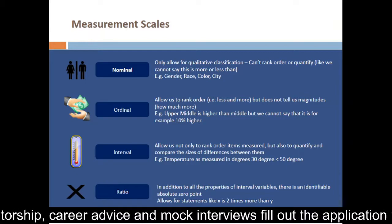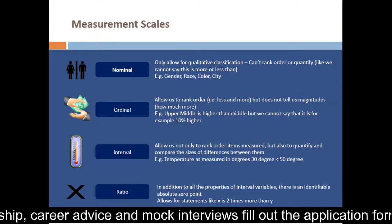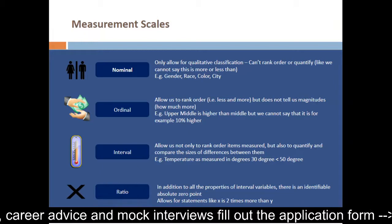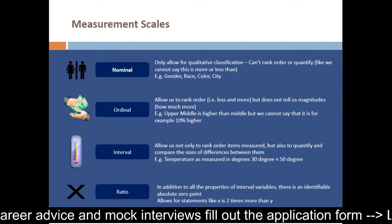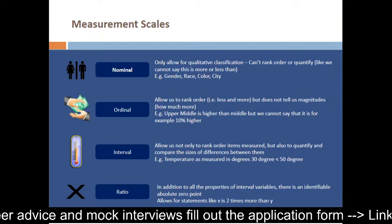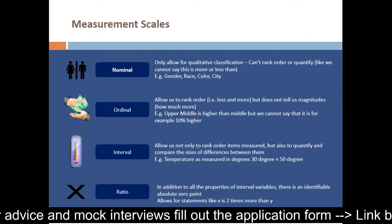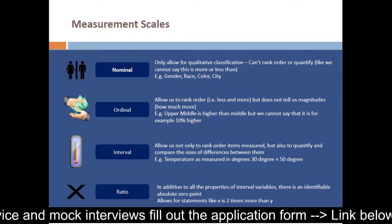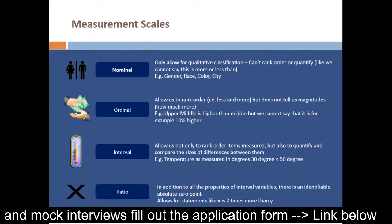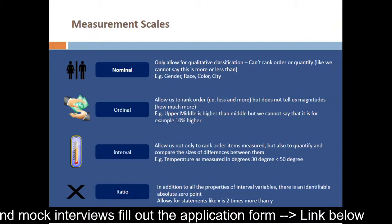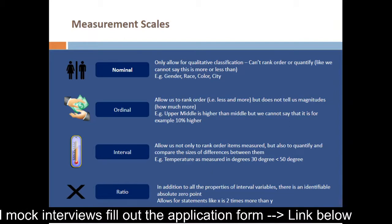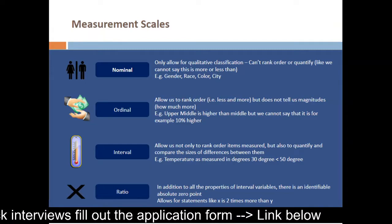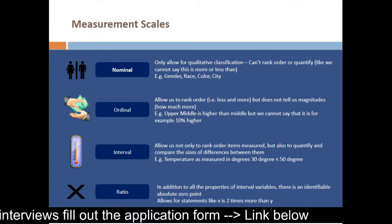On the other hand, we have variables which can be also called ordinal. Here it allows us to rank order the variables in a way so that we can say X is less or more than Y. However, ordinal variables do not give us insight about the magnitudes. For example, we cannot say how much more is X compared to Y.